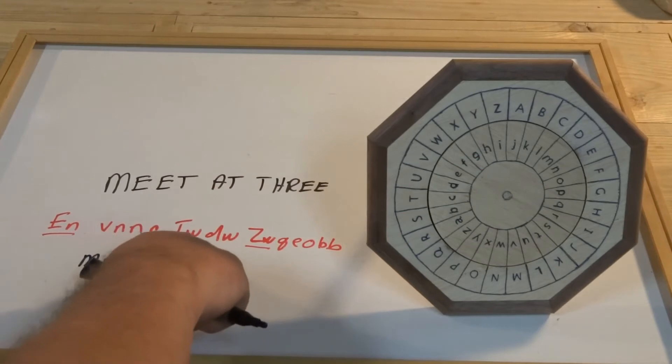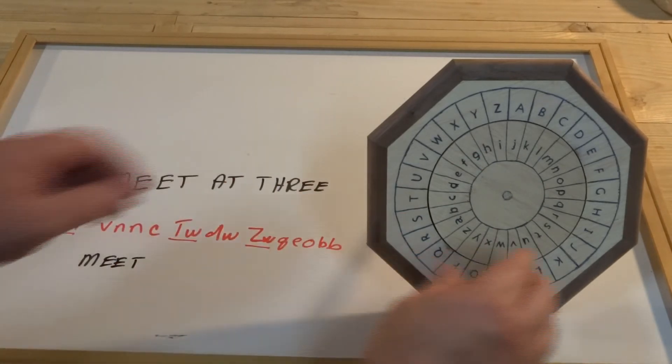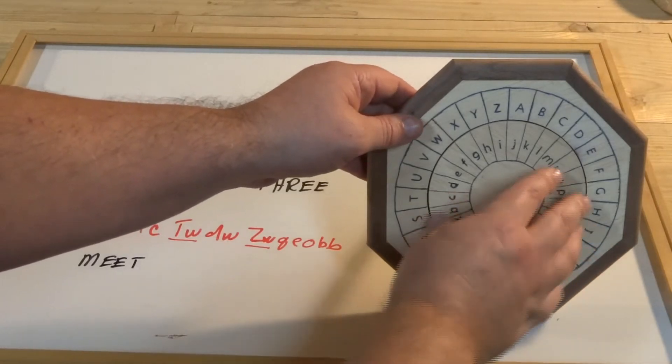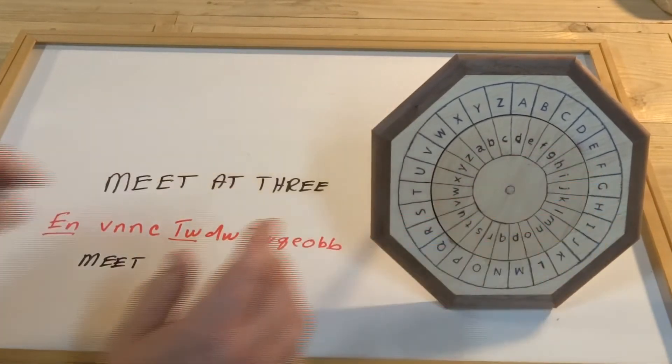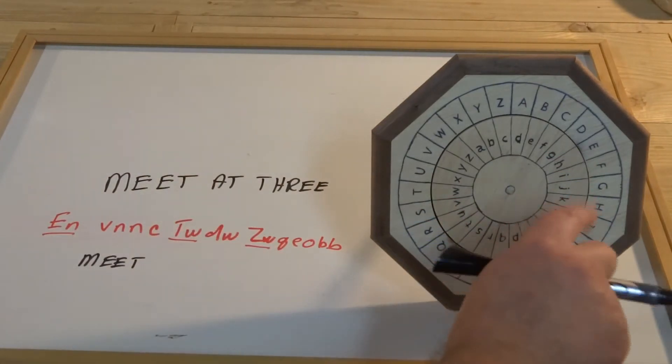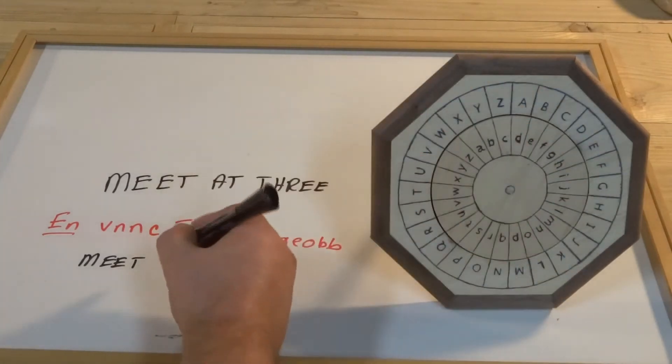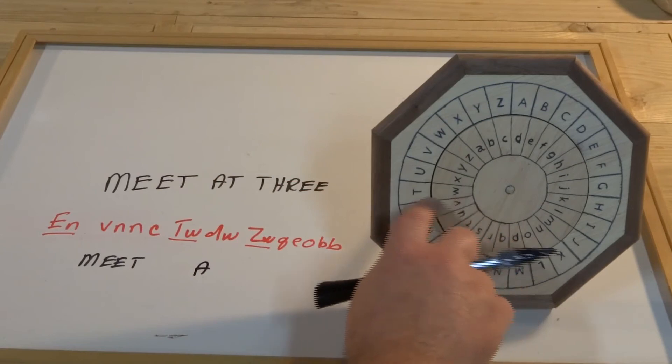And then we hit the index that says turn the wheel again. So we'll do that, and we'll set the index to T and W. There we go. And then we translate the next portion, which is D on the inner ring is A. And W on the inner ring is T.